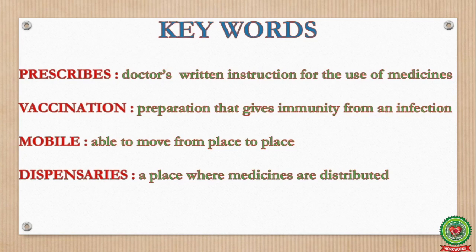Before reading, let me discuss some key words. Number one: prescribes — doctor's written instruction for the use of medicines. Number two: vaccination — preparation that gives immunity from an infection. Number three: mobile — able to move from place to place. Number four: dispensaries — a place where medicines are distributed.